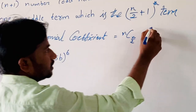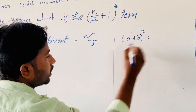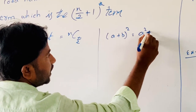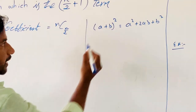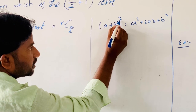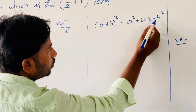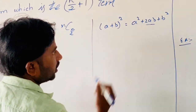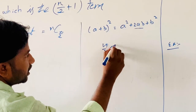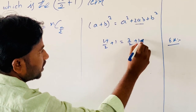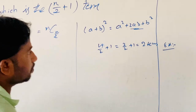For example, see what I have done here. (a + b)² equals a² + 2ab + b². Here the index is 2, meaning the number of terms is 3. What is the middle term? There is only one middle term. Using the formula n/2 + 1, that is 2/2 + 1, meaning the second term is the middle term.